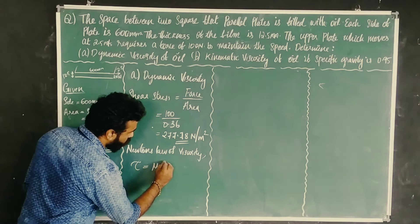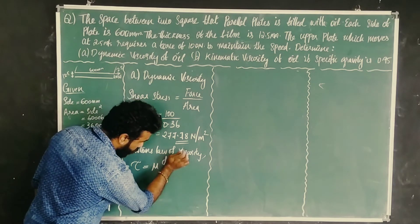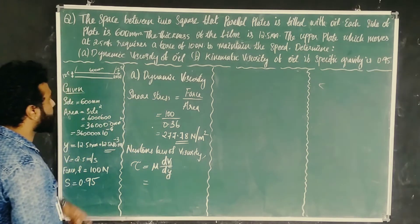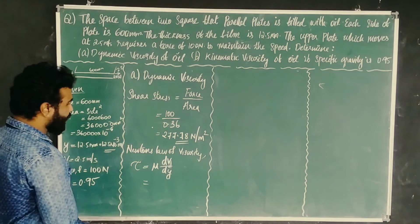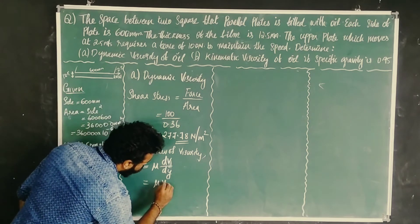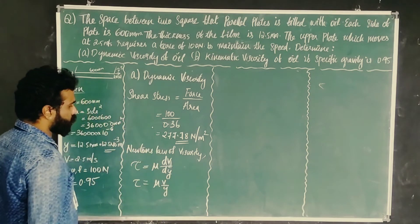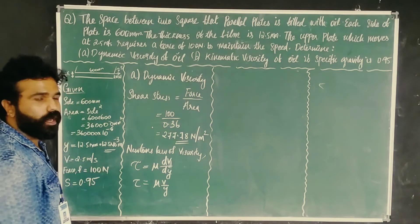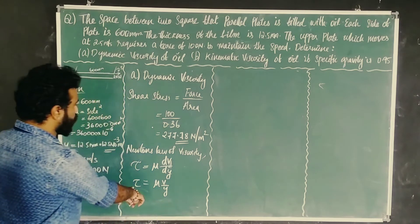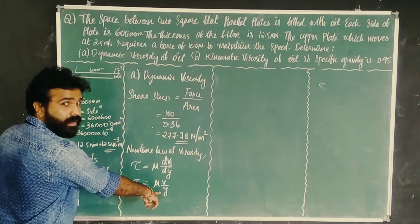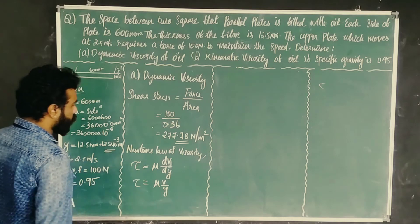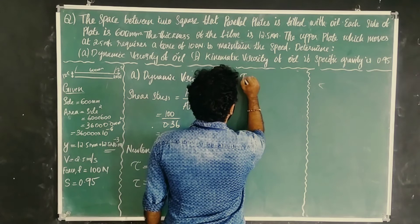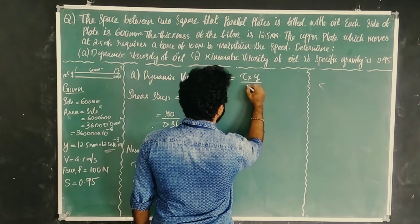Shear stress tau equals mu times dv/dy. Since velocity is constant, this becomes tau = mu × v/y. Rearranging, mu equals tau × y divided by v.